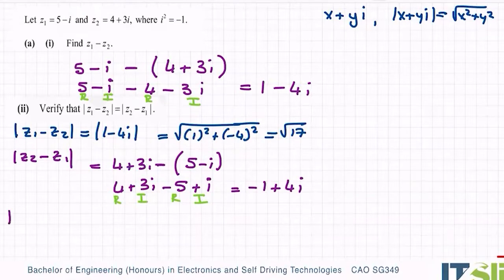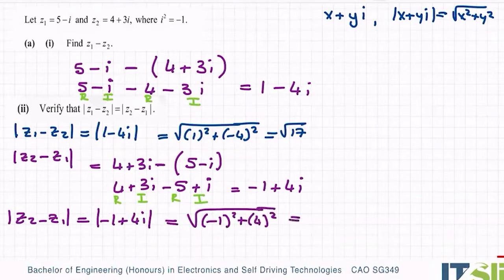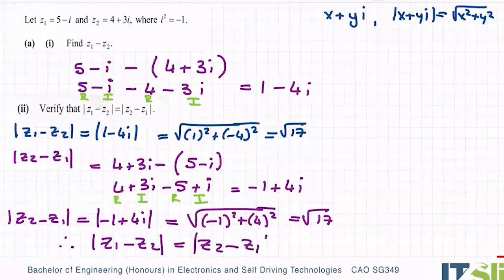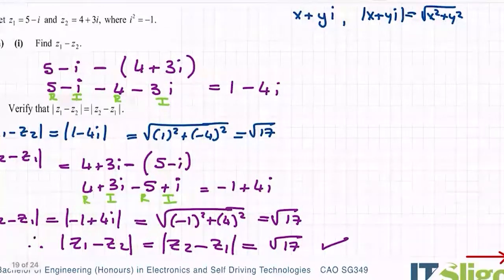So now if I get the modulus of Z2 minus Z1, I'm getting the modulus of minus 1 plus 4i. So it's the square root of minus 1 squared plus 4 squared. Put that into your calculator, you get 16 plus 1 is root 17. So therefore, give them back their own language: the modulus of Z1 minus Z2 is equal to the modulus of Z2 minus Z1, because both of them are equal to root 17.